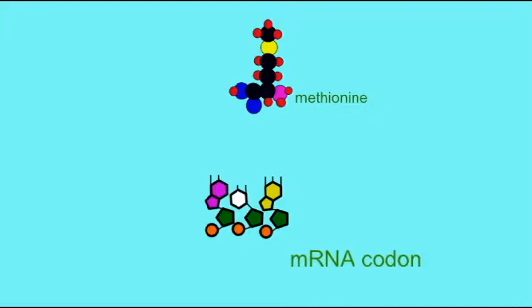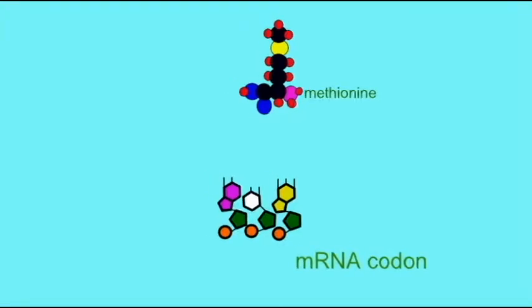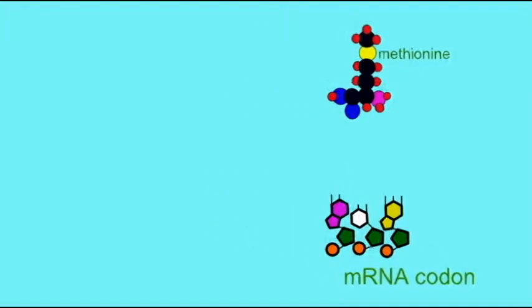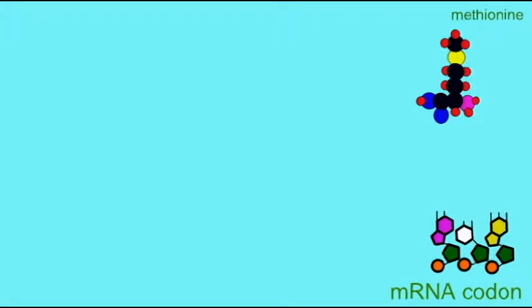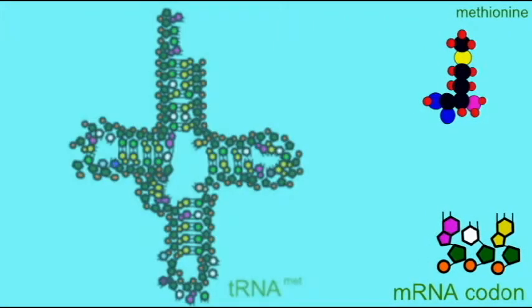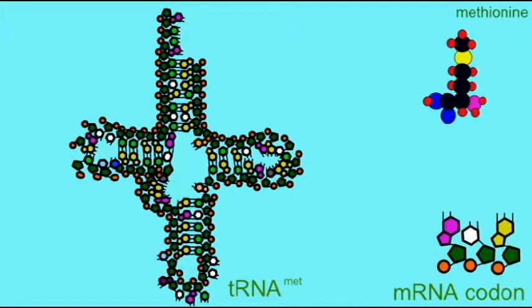Therefore, there is an mRNA codon which signals methionine should be inserted at a specific spot. This codon contains the nucleotides AUG: adenine, uracil, guanine.